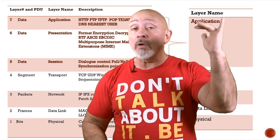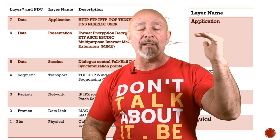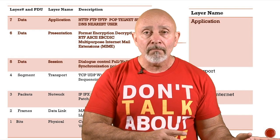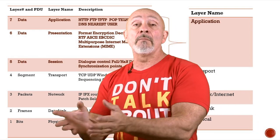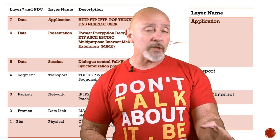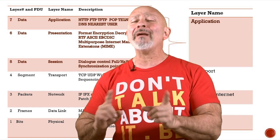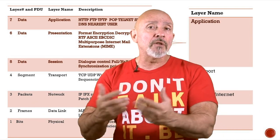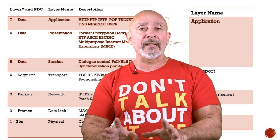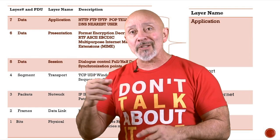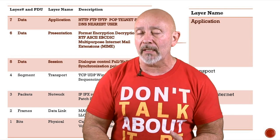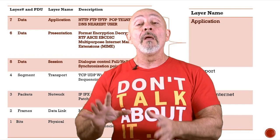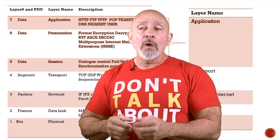Whatever happens in the Application layer of the TCP/IP model is the same thing going on in OSI layers seven, six, and five. The Transport layer can also be called Host-to-Host. Things that happen there include TCP, UDP, and windowing. The Network slash Internet layer — think about it: routing protocols, IP addressing. It's used to troubleshoot, and more streamlined because there are fewer layers to look at.